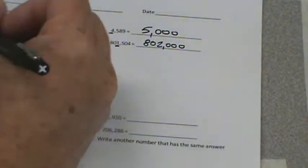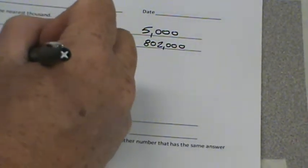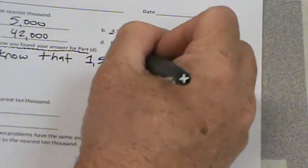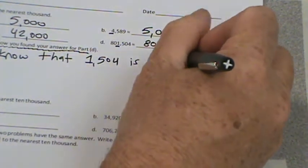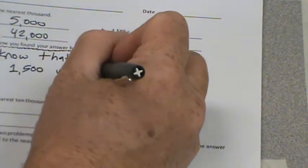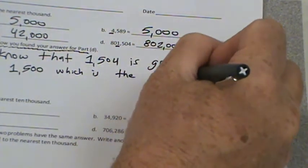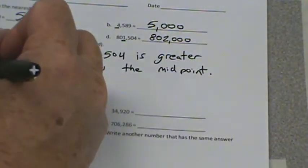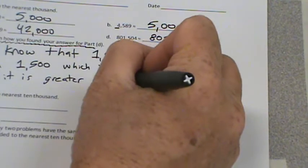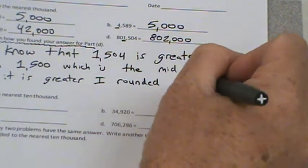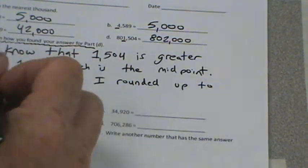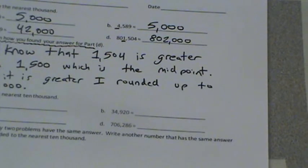Explain how you found your answer for part D. We could say, I know that 801,504 is greater than 801,500, which is the midpoint. Since it is greater, I round it up to 802,000. See what I mean? There's the 2,000, the 1,000 spot. You can go ahead and pause if you like.